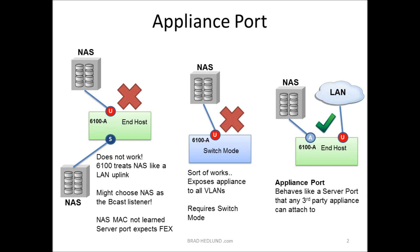There is one way to sort of make it work, and that was to convert the 6100 to switch mode. In switch mode, MAC learning is performed on all of the ports, including the uplink ports. So if we attached our NAS to an uplink port in switch mode, we would learn the MAC address and connectivity would be established. However, you had to sacrifice all of the benefits that end-host mode brought you — simplified connectivity to the LAN, no spanning tree, and optimized MAC learning.